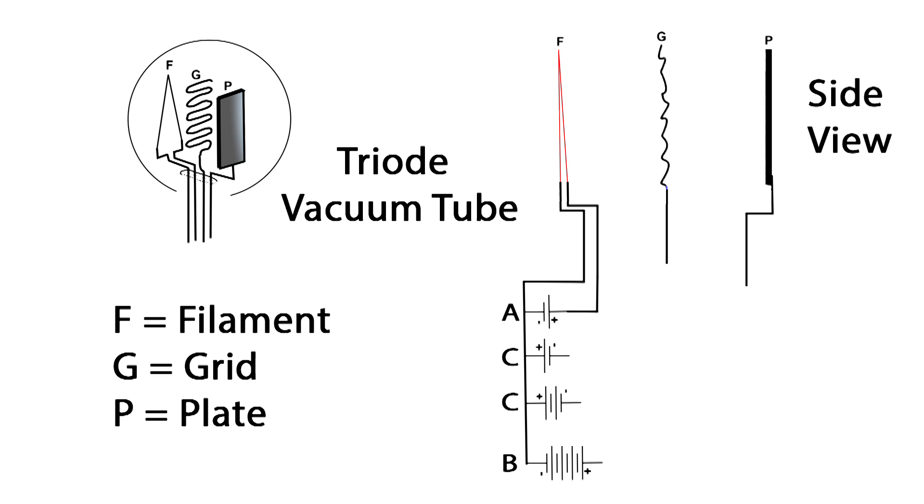Now back to the filament. As it is heated, what this does is it allows the electrons to very easily leave the filament if there is a positive charge. So in other words, the electrons will leave from the filament and travel to, in this case, the plate.